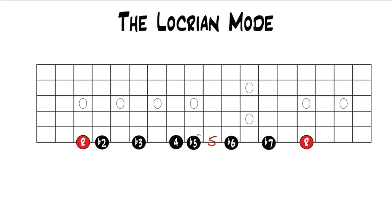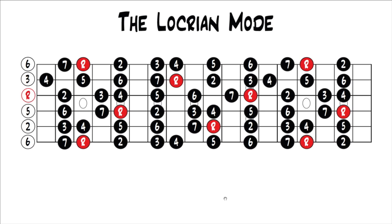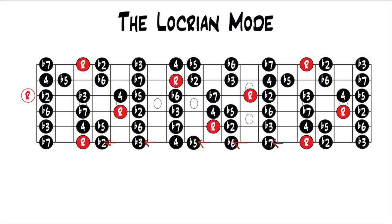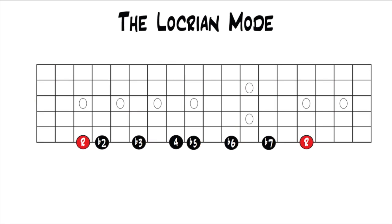The Phrygian mode had the perfect fifth — you just lower that half a step to the flat 5 or diminished fifth, and that gives you Locrian. If we compare it to the Ionian mode, that's where all the flats are coming from, since we base everything on the Ionian mode or major scale. You would lower the 2, 3, 5, 6, and 7 each half a step — the only one you wouldn't lower is the 4. That's why it's easier to look at Phrygian, because there's only one note different. With all these flats, this is a very dissonant sounding scale, and that's why it's not used often.